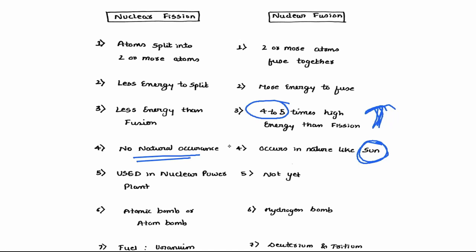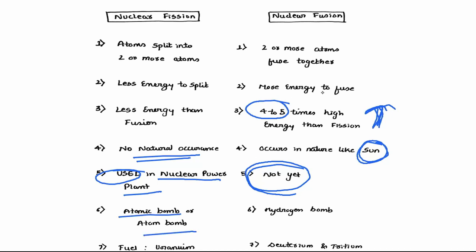Nuclear fission is used in nuclear power plants. Nuclear fusion is not yet used in power plants — it is still in the experimental stage. Nuclear fission is also used in atom bombs, while nuclear fusion is used in hydrogen bombs. The fuel used in nuclear fission is uranium, and the fuel used in nuclear fusion is deuterium or tritium.